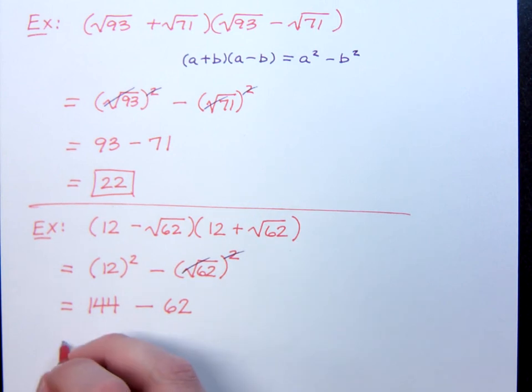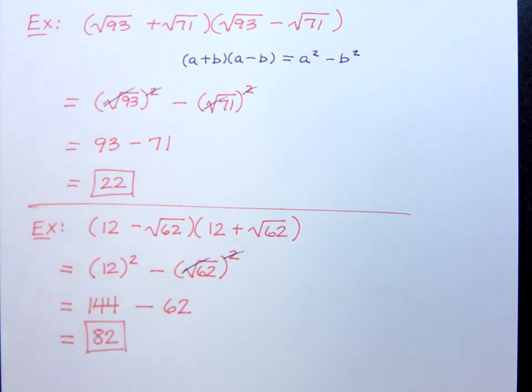So then what's 144 minus 62? 82. Those are cool.